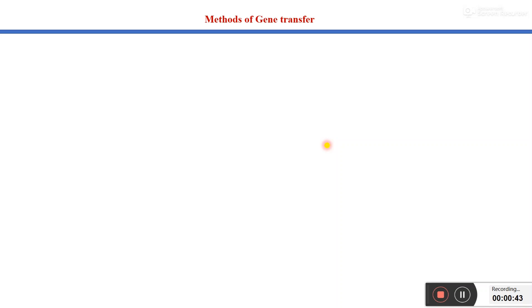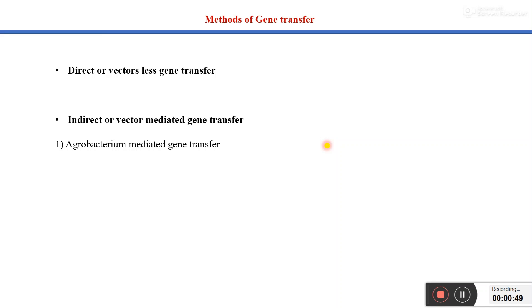Gene transfer methods are of two types: first is direct or vector-less gene transfer, and second is indirect or vector-mediated gene transfer. In direct or vector-less gene transfer, we don't need any vector or organism to transfer our gene of interest into the target cell. In indirect or vector-mediated gene transfer, we generally need a vector or organism. Vector-mediated gene transfer is the most popular method of indirect gene transfer.